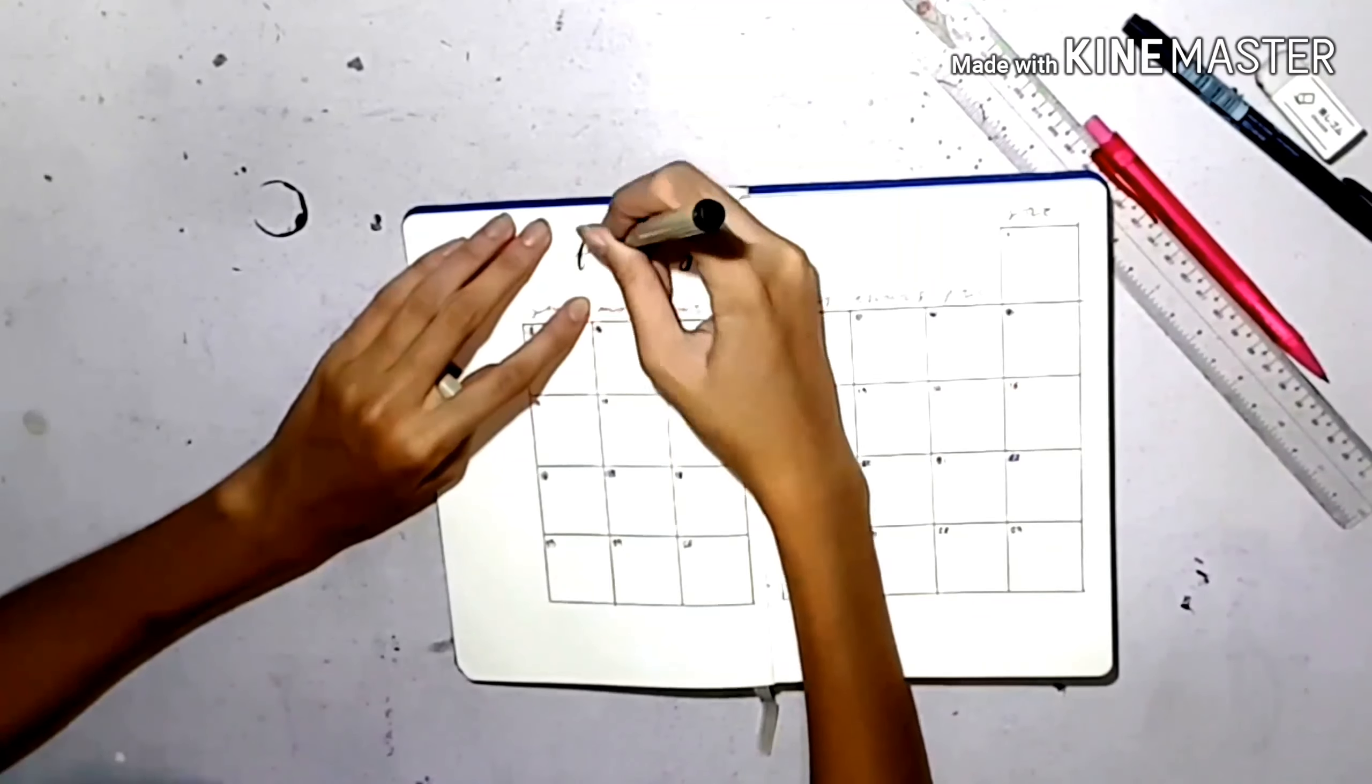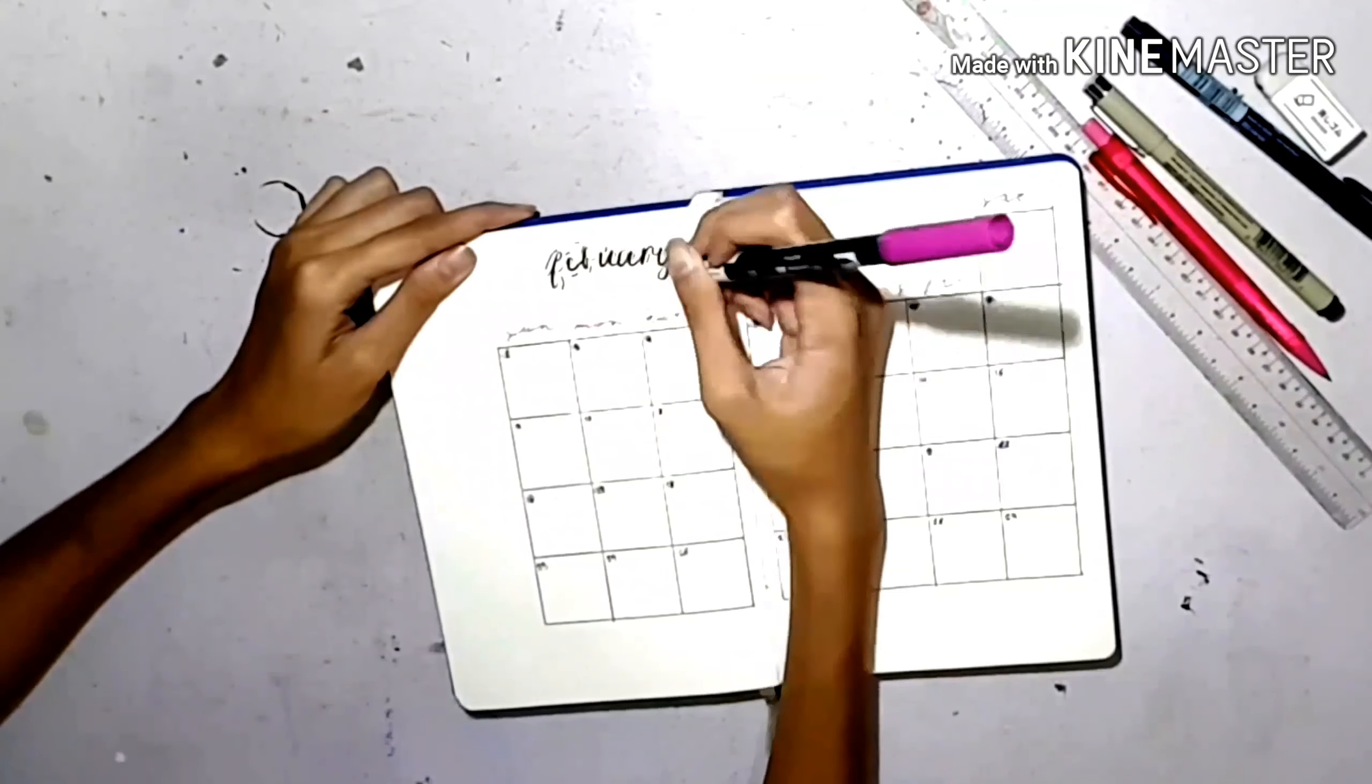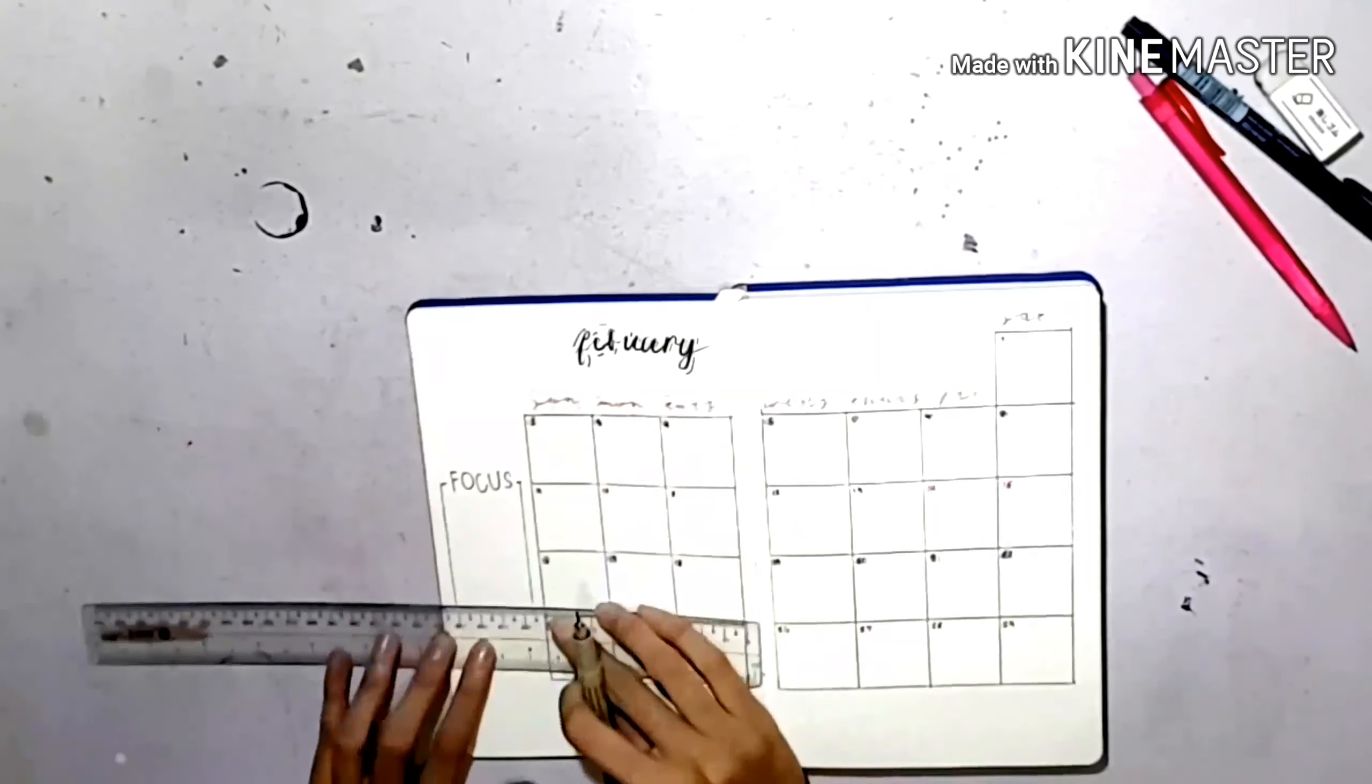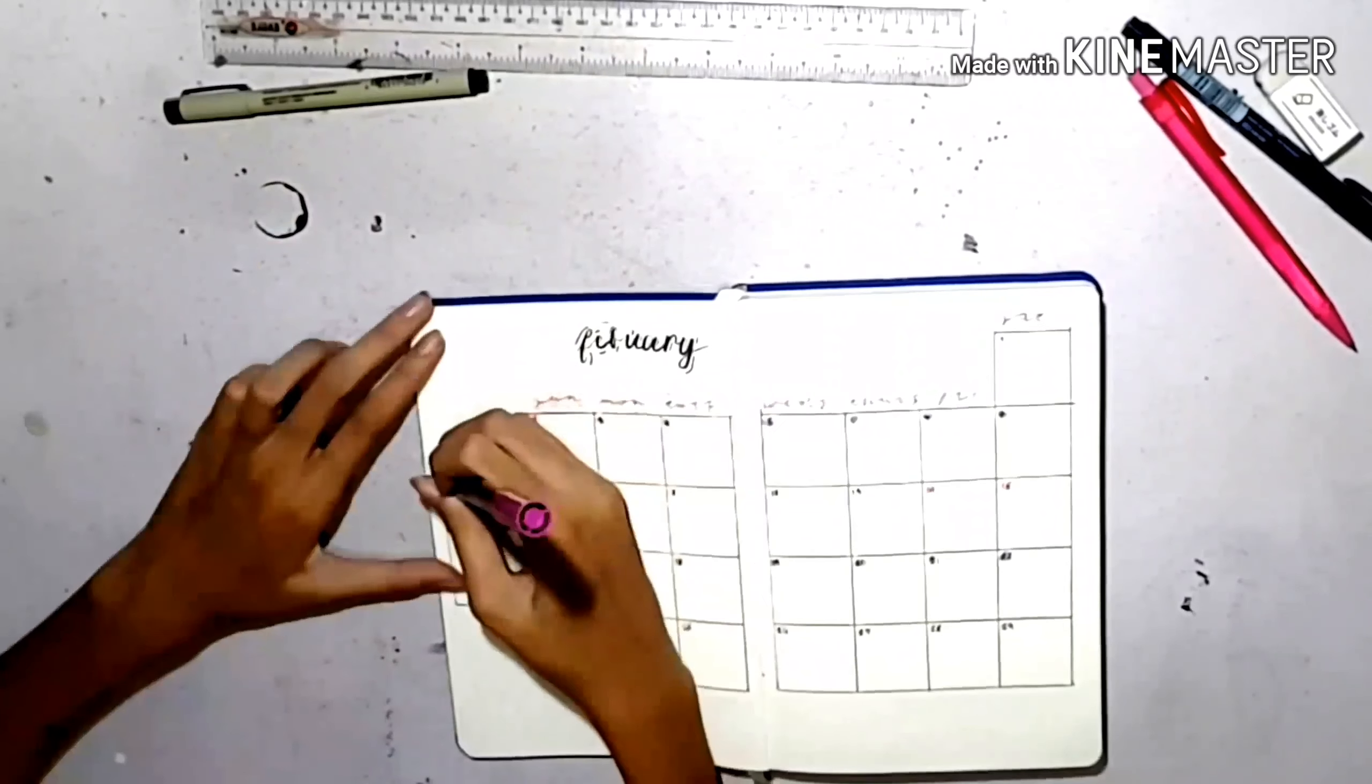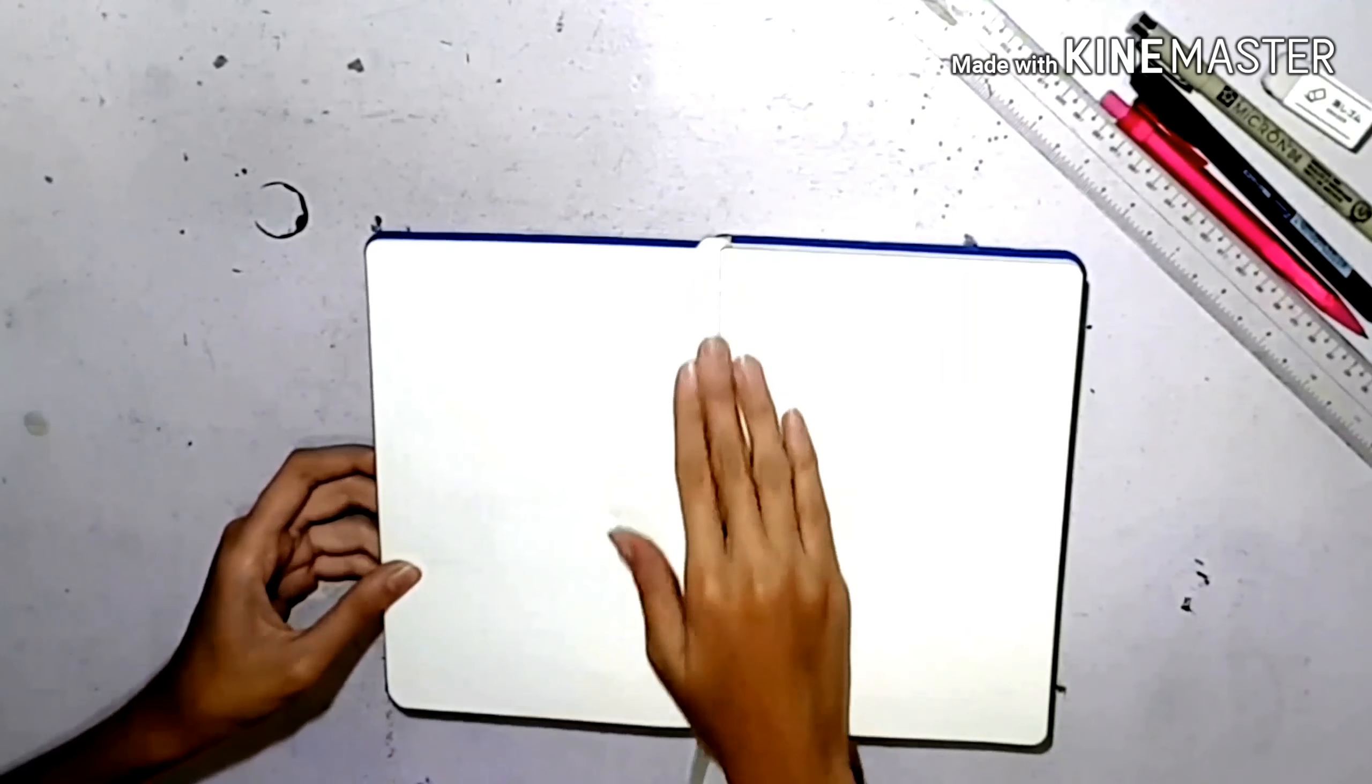Then I wrote February again - it's just not my month of hand lettering. On the left I am putting a focus box which I actually needed.